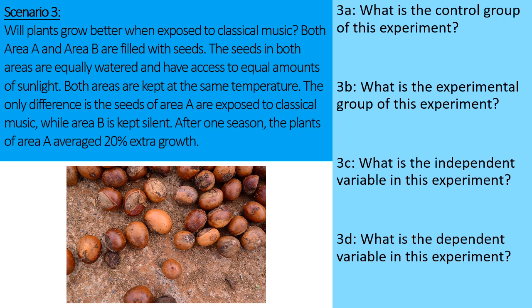Scenario three. Plants grow better when exposed to classical music. Both area A and area B are filled with seeds. The seeds in both areas are equally watered and have access to equal amounts of sunlight. Both areas are kept at the same temperature. The only difference is the seeds of area A are exposed to classical music, while area B is kept silent. After one season, the plants of area A averaged 20% extra growth.